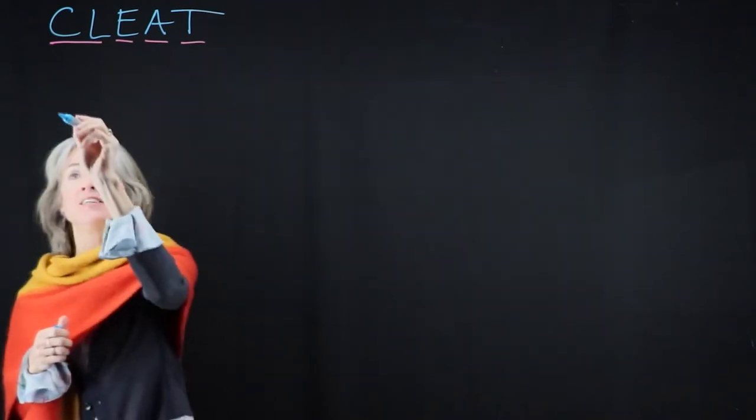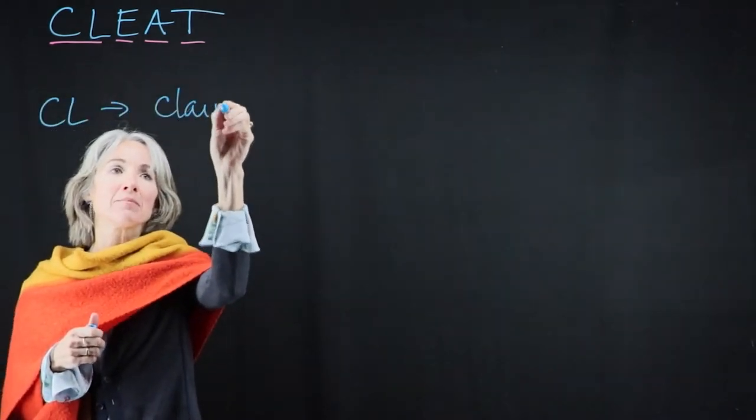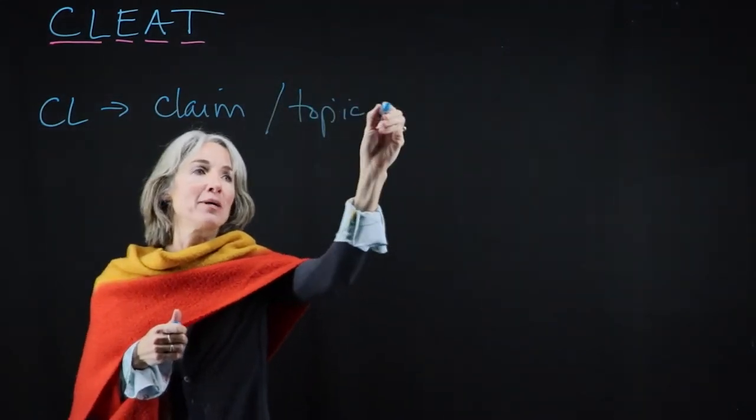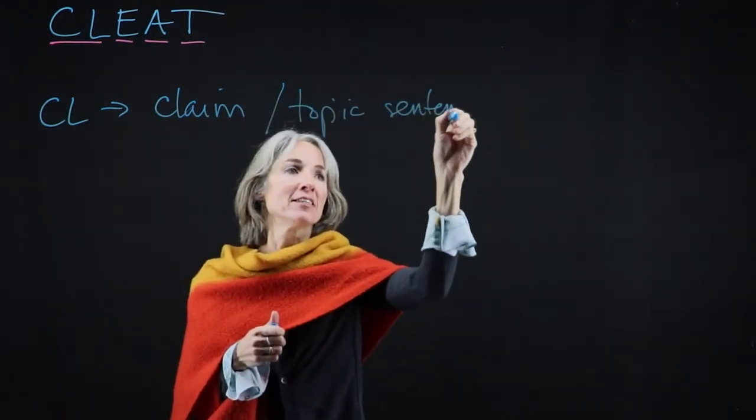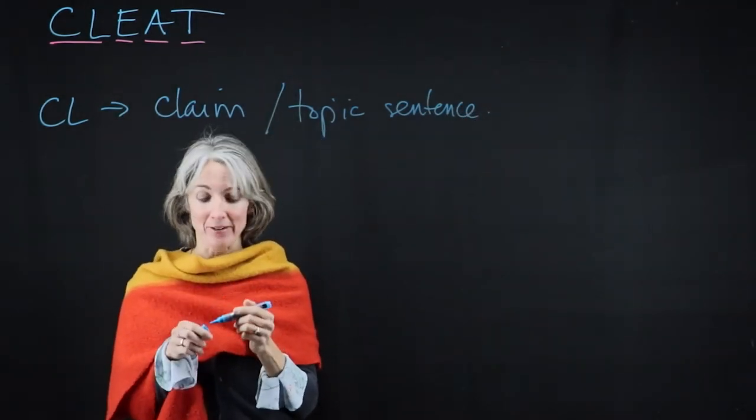We'll start with C-L. C-L is your claim - you can also think of it as your topic sentence. It is the unifying idea behind the paragraph.